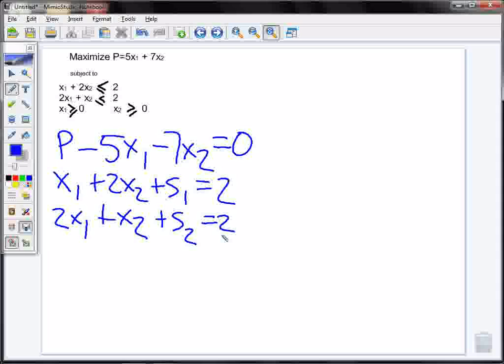Now I'm going to lay out my tableau and see what it looks like. So on the top of my tableau, I have p, x1, x2, s1, s2, and my right hand side.